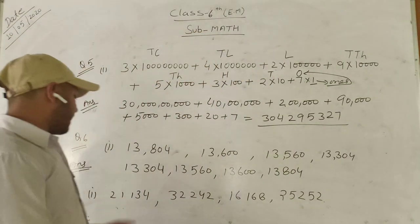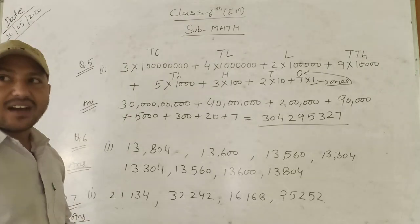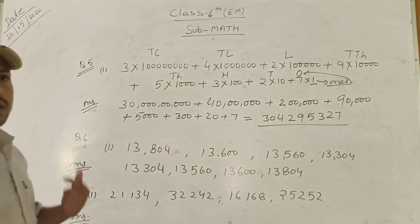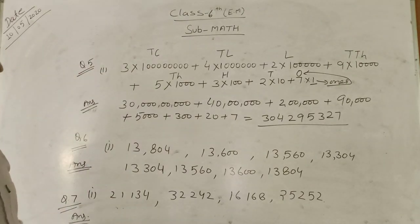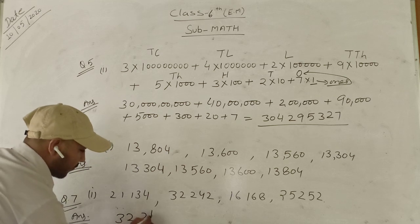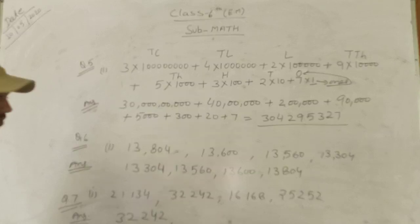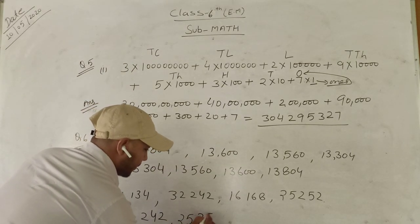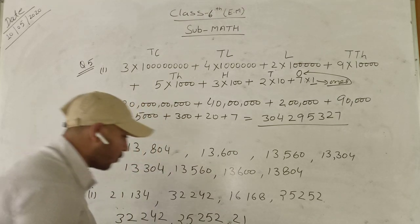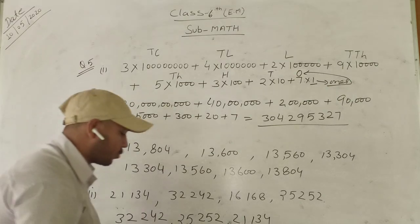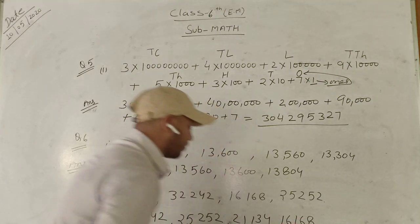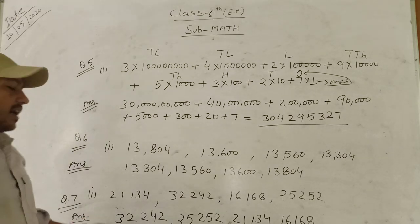Question number 7 says: Arrange the following numbers in descending order. Descending order means arrange from the highest number to the lowest number. In this case, the highest number is 32,242. Then 25,252 is lower than 32,242. And 21,134 is lower than 25,252. So the descending order is: 32,242 → 25,252 → 21,134. This is the answer of part 1 of question number 7.